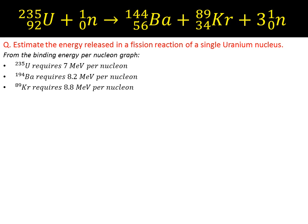We see that uranium-235 requires seven megaelectron volts per nucleon, and barium and krypton numbers there as well.